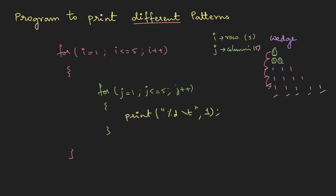The first iteration prints once, the second time twice, the third time three times, and so on. After each row we need a new line, so I'll use printf with \n in the outer loop. So the outer loop is basically your row logic and the inner loop is the print logic.